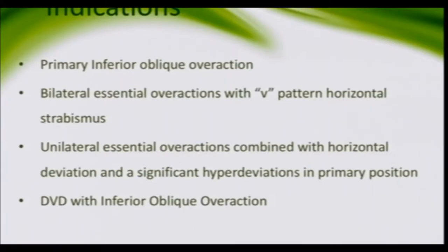Basically, the indication is whenever the inferior oblique overacts, and when there is an overaction, we have to do a weakening procedure. The indications include primary inferior oblique overaction — bilateral essential overactions with V-pattern, unilateral essential overactions combined with horizontal deviations, and a significant hyper deviation in primary position, as well as DVD associated with inferior oblique overaction.